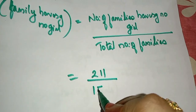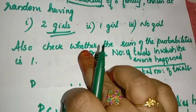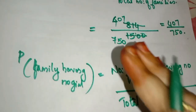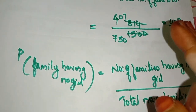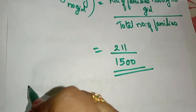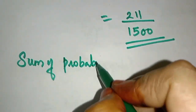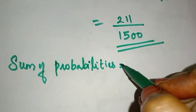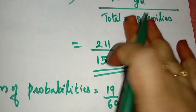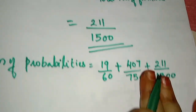P(no girl) = 211 divided by total number of families, which is 1,500. So P(no girl) = 211/1500. Now we also check whether the sum of probabilities is 1: 19/60 plus 407/750 plus 211/1500, with different denominators.